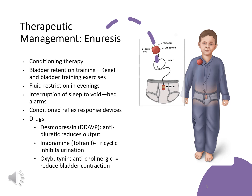Our last option would be medication. We definitely don't want to jump to this first because of side effects, especially in children. First line, we'll offer desmopressin, which is an antidiuretic that reduces the amount of output. Next would be a tricyclic antidepressant, which inhibits the urge to urinate. And then oxybutynin, which is an anticholinergic drug that reduces bladder contractions.